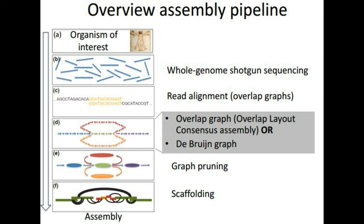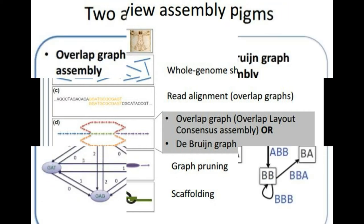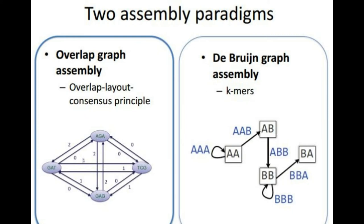So there are two assembly paradigms which are the overlap graph assembly and the de Bruijn graph assembly which deals with building k-mers.